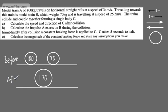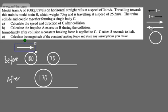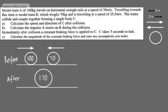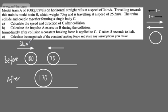Let's go ahead and put the speeds on. These are travelling towards each other, so we'll have A travelling in one direction and B travelling in the opposite direction. A has a speed of 34 m/s and B has a speed of 25.5 m/s. I'm taking the direction from A to B as positive.